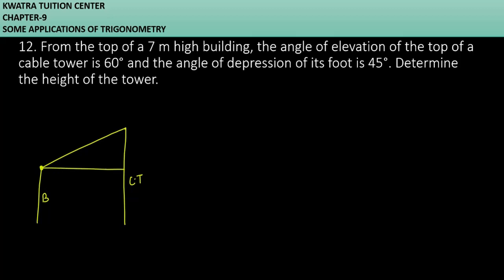If you make an angle of elevation to the top of the building, the angle of elevation is 60 degrees. This means this angle is 60 degrees for us. And the angle of depression of its foot is 45 degrees. If you look at the bottom, the angle made is 45 degrees. So this is your complete diagram.